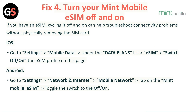Fix 4: Turn your Mint Mobile SIM off and on. If you have an eSIM, cycling it off and on can help troubleshoot connectivity problems without physically removing the SIM card. For iOS: go to Settings, then Mobile Data, then under the data plans list select your eSIM and switch it off and on. For Android: go to Settings, then Network and Internet, then Mobile Network, tap on the Mint Mobile SIM and toggle the switch off and on.